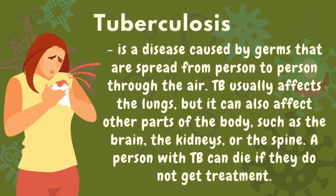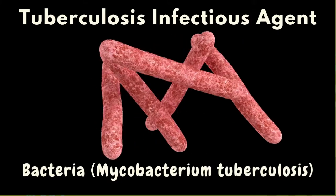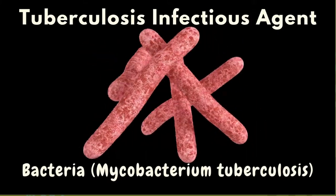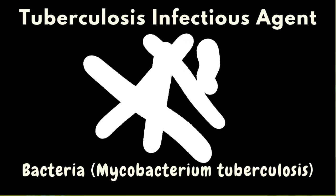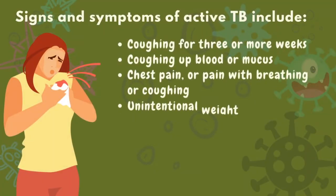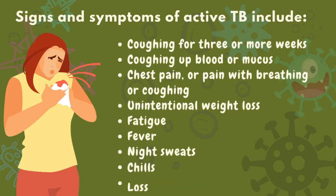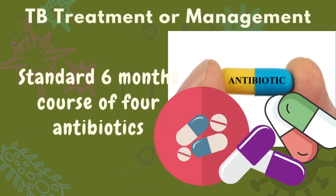Tuberculosis is a disease caused by germs spread from one person to another through the air. TB usually affects the lungs, but it can also affect other parts of the body such as the brain, kidneys, or the spine. A person with TB can die if they do not get treated. The infectious agent is Mycobacterium tuberculosis. A standard 6-month course of 4 antibiotics is the way to treat tuberculosis.